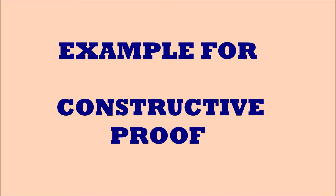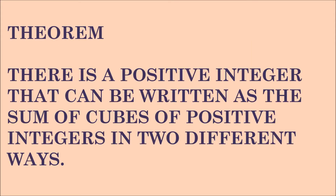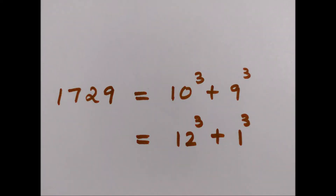Let's see an example to understand constructive existence proof more clearly. The theorem states that there is a positive integer that can be written as the sum of cubes of positive integers in two different ways. So we need to show the existence of a positive integer where the property it should satisfy is that you can write it as a sum of cubes of positive integers in two different ways.